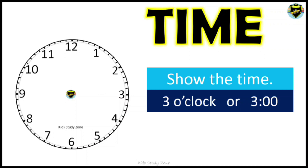The face of the clock is empty without any hands — we need to draw the hands to show the time. In the box we can see it's 3 o'clock. First, from the center point, we draw the minute hand to 12 o'clock. Then from the center point again, we draw a small hand pointing to number 3. That shows 3 o'clock.